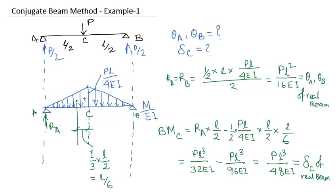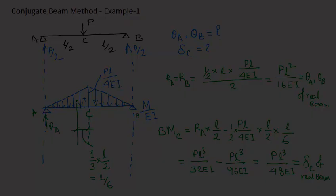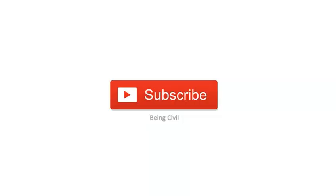So this is the first example of a very simple beam, determining slope and deflection by using conjugate beam method. We will do another example in the next video. If you like this video please thumbs up and hit the subscribe button below. Thanks for watching, stay tuned.